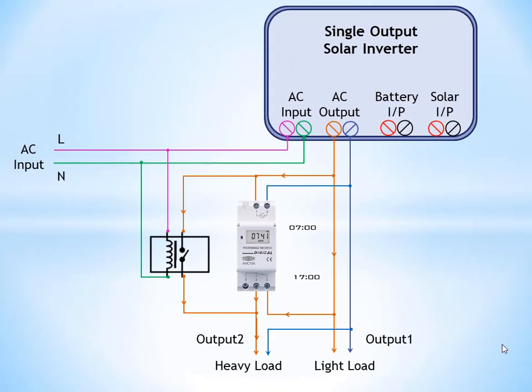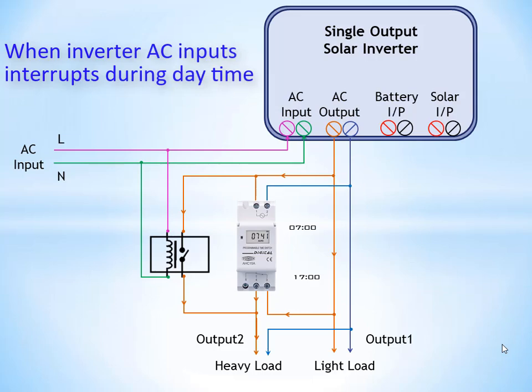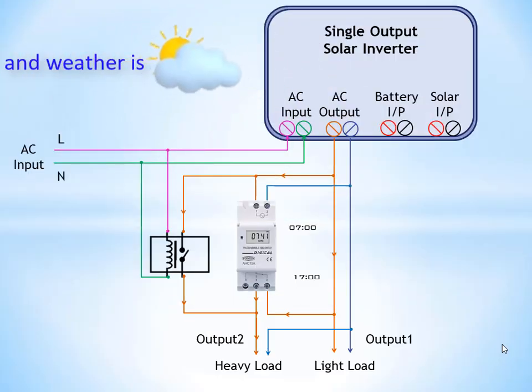The main drawback of that circuit is when inverter AC input interrupts during daytime and weather is cloudy, then solar power will not be sufficient. In this case, rest of the load will be run by batteries.